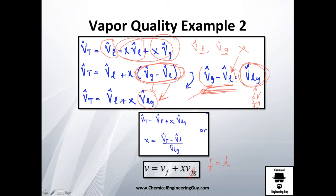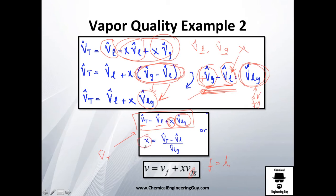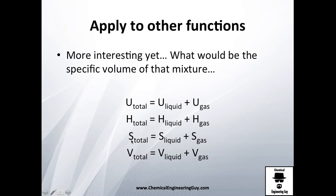With this new variable, the specific volume of the mixture is essentially the specific volume of the liquid plus the vapor quality times v_fg — the difference of gas minus liquid. This is our equation. You can also rearrange it to solve for vapor quality x if you know the specific volume and the tabulated values at that pressure and temperature.